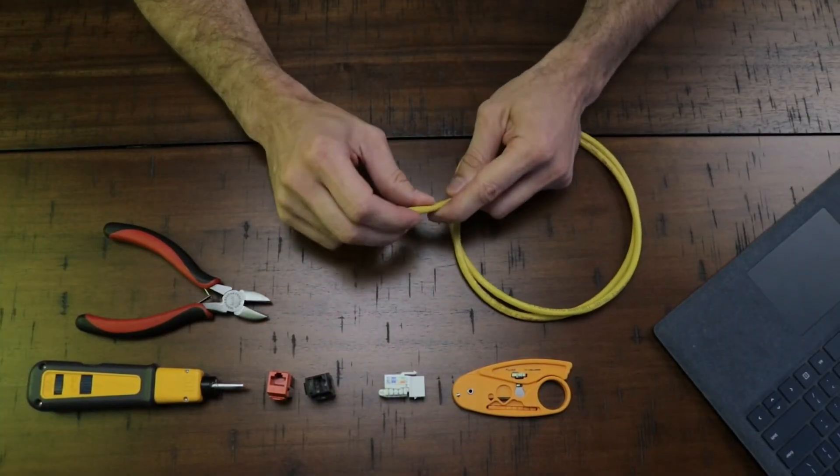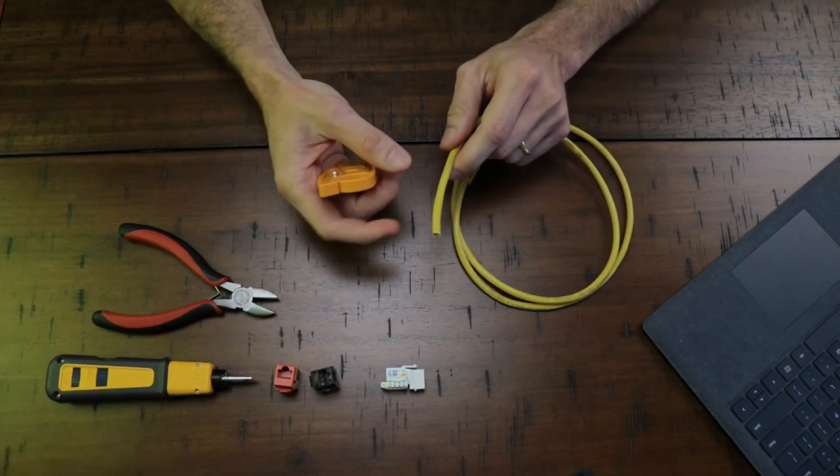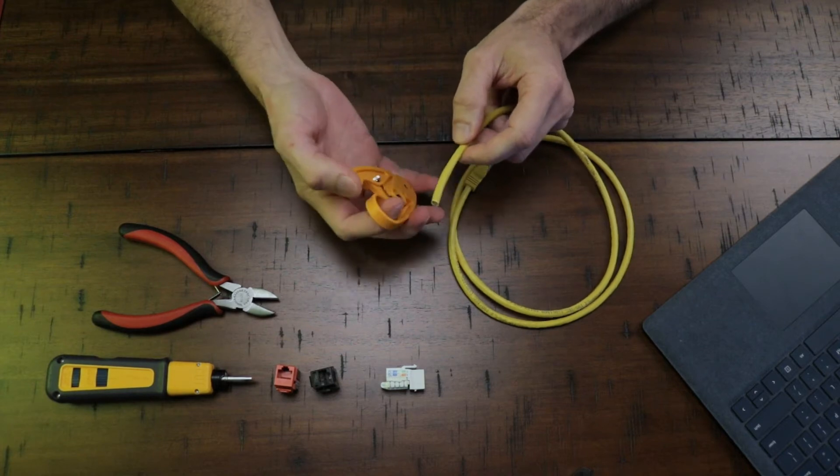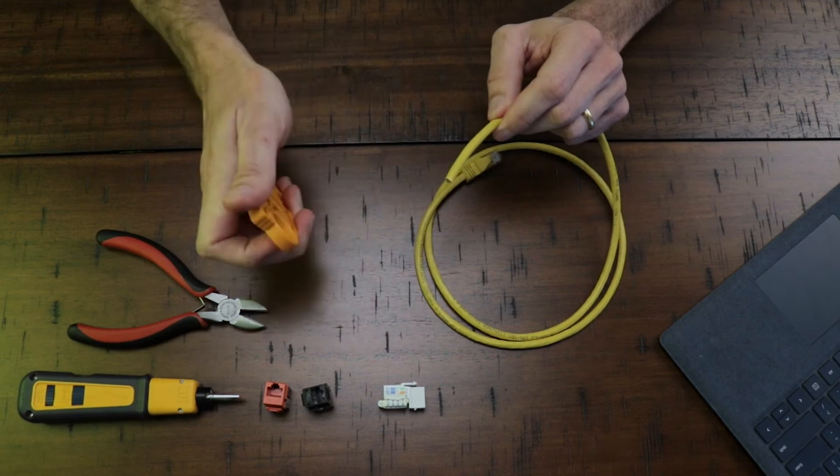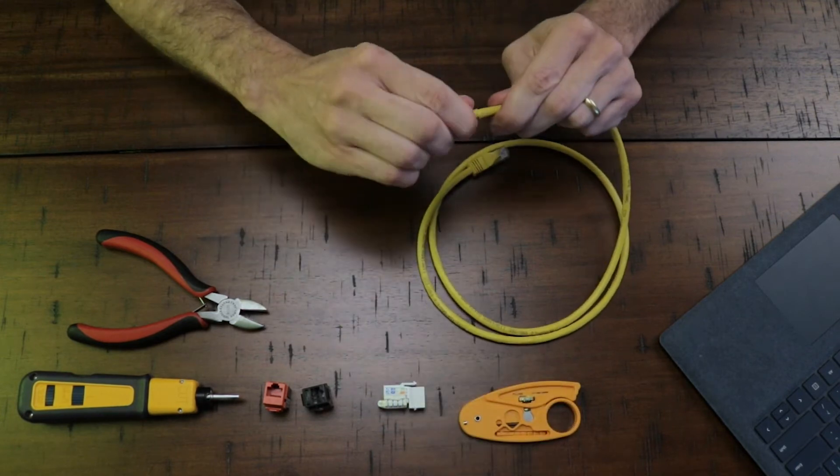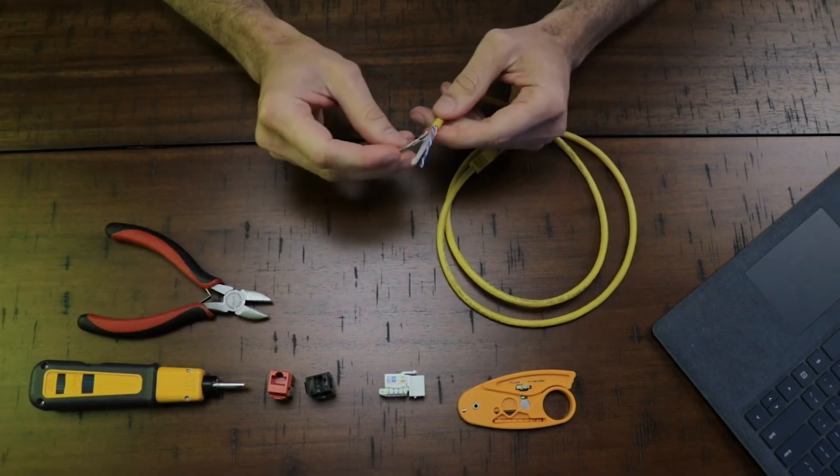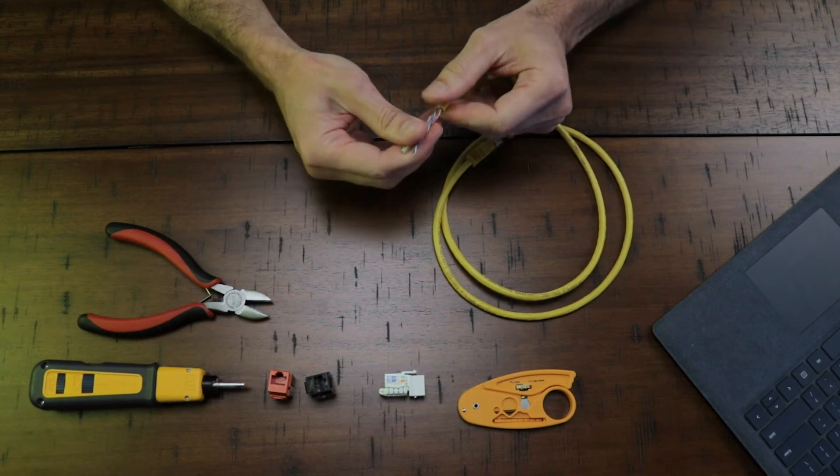The second step is to remove the outer jacket by using a UTP cable stripper to remove three inches of the ethernet cable jacket. Give one revolution, that should be fine, and take it out. Once you remove it, just check if all the wires on the inside are not damaged.